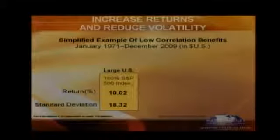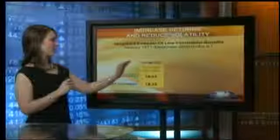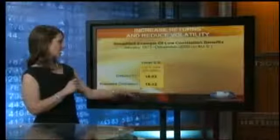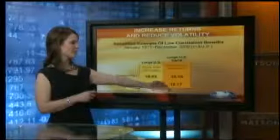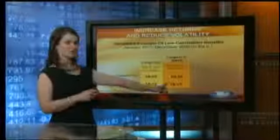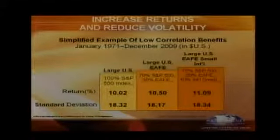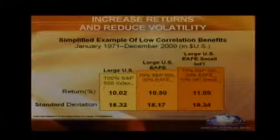As an example of diversification and how we reduce standard deviation and increase return: with a US large portfolio 100% in the S&P 500, the return is 10% with a standard deviation of 18.3. If we diversify 30% of that into international large stocks, we end up with a return of 10.5, increasing our return by 0.5%, and our standard deviation drops a little. If we take 10% of that international portion and put it into international small companies, we bump up our return to 11% — a full percentage point from all US — while keeping our standard deviation essentially the same. So we're increasing return while keeping our risk consistent.